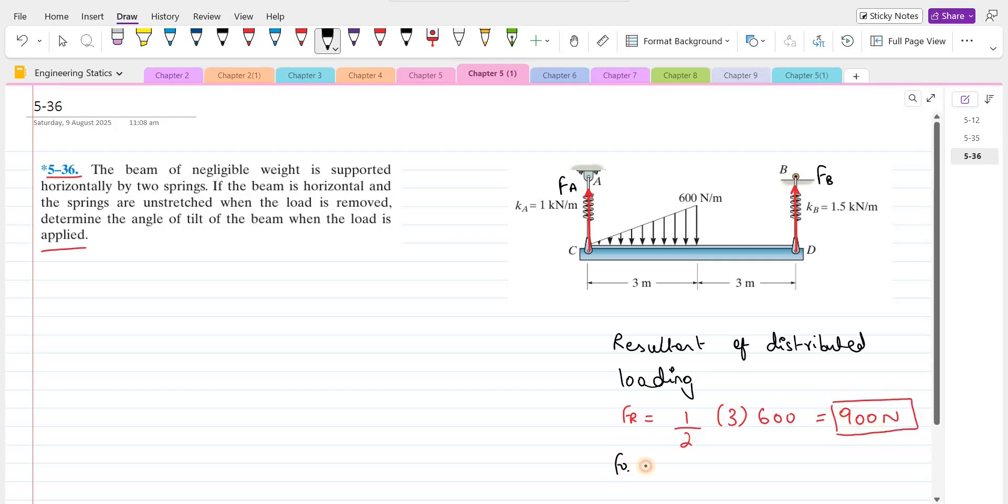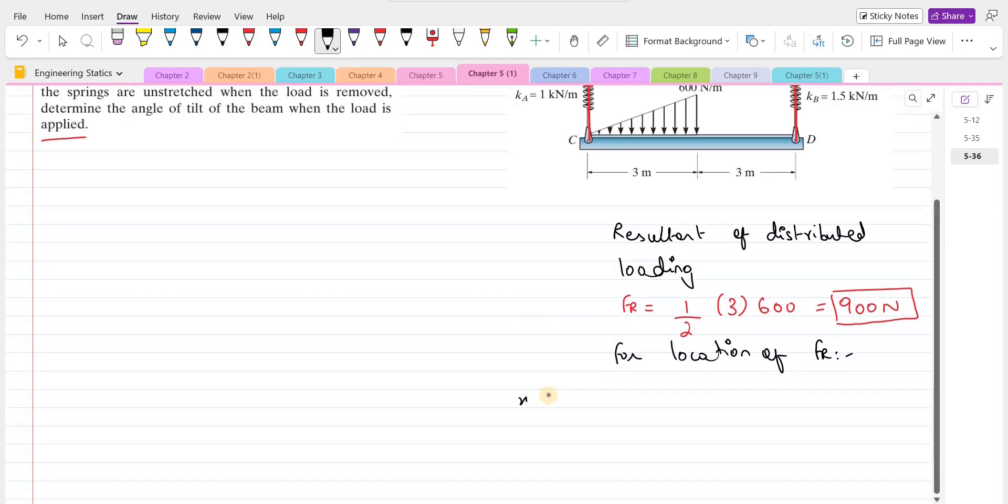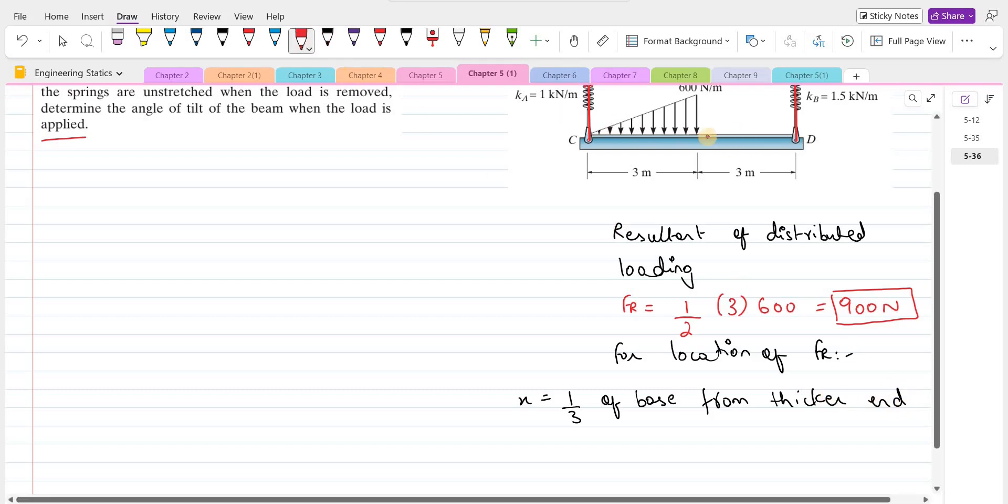Now for the location of this resultant force. So in the case of the triangle, it is 1 third of base from thicker end. And this is the thicker end of the triangle. So the location is 1 over 3 of base, which is 3. So 1 meter from the thicker end.